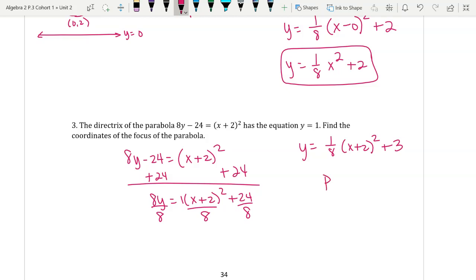So because of that, we can see that the p-value is two, because remember this eight on the bottom here is really representing 4p. So it multiplies by four to make eight is two. And the vertex is at the coordinates (-2, 3). So if we're at the vertex of (-2, 3), and we want to find the focus, since the p-value is positive, we're going to go up two. So if I go up two from this point of the focus, I get (-2, 5).